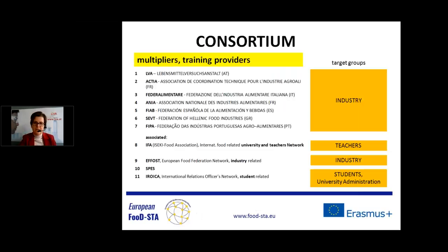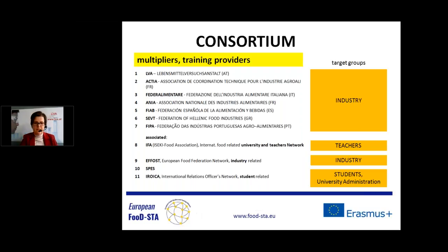Multipliers and training providers with different target groups are also involved: LVA provides training for food industry in Austria; we also have Actia from France, Federalimentare from Italy, Ania from France, FIAP from Spain, Zeft from Greece, and FIPA from Portugal. Associated partners are the EVA Food Association, University and Teachers Network FFOST, SPES, and EROICA.